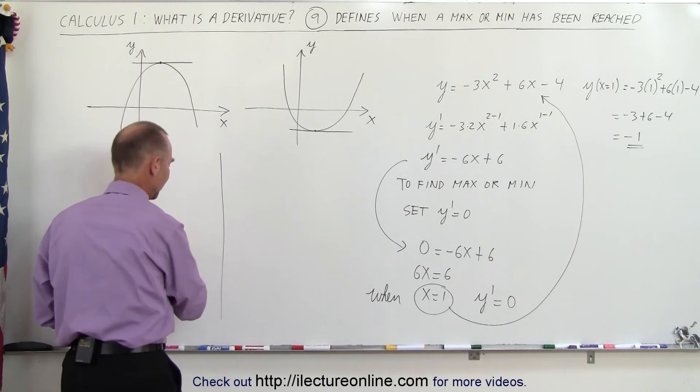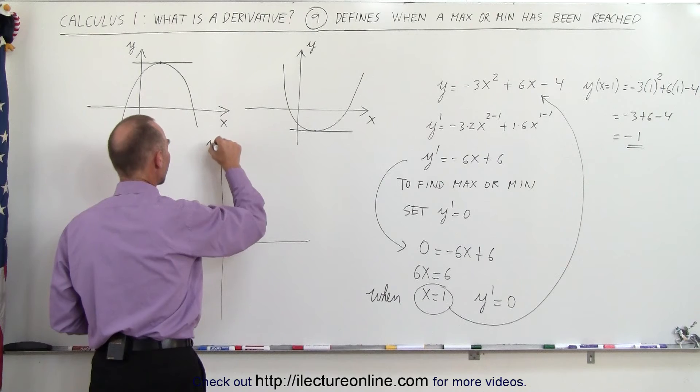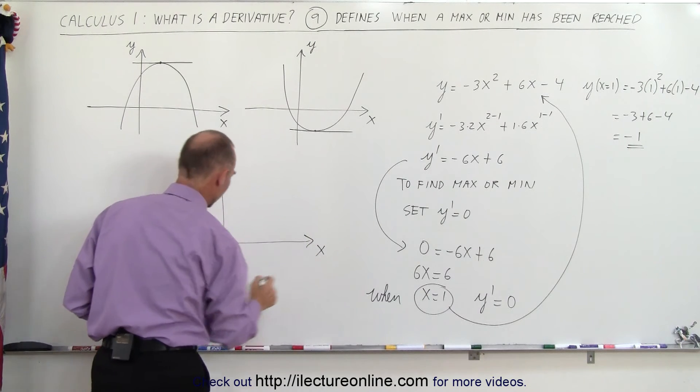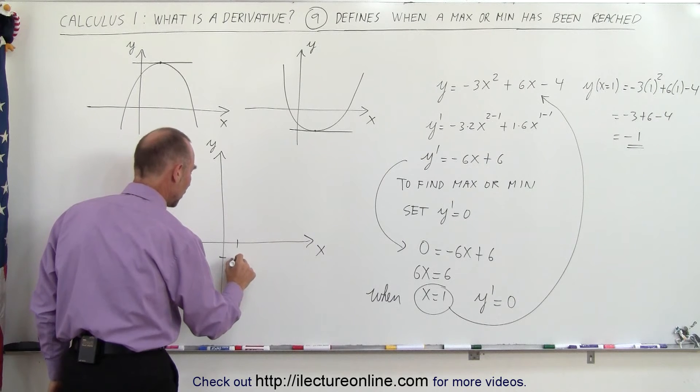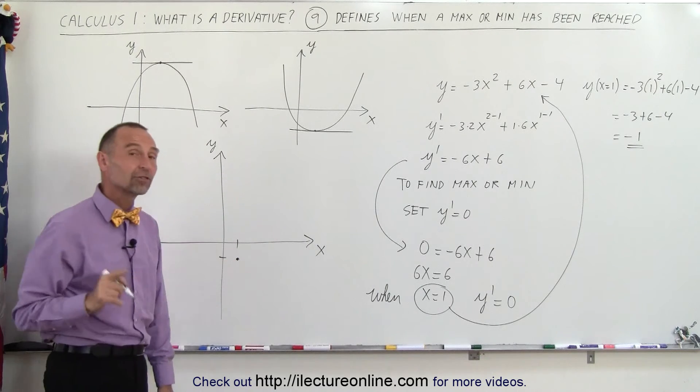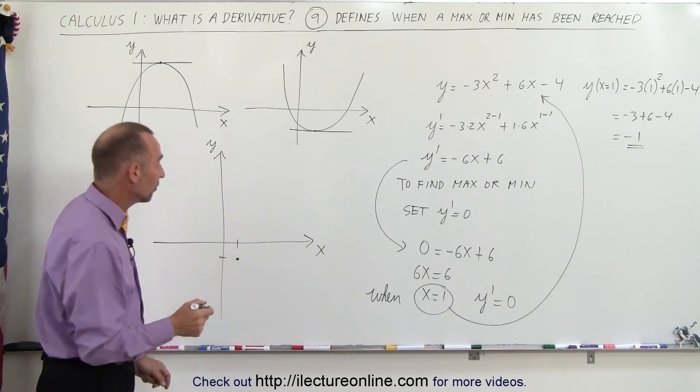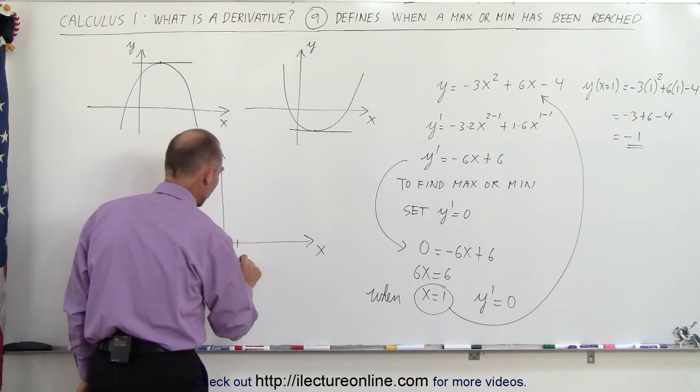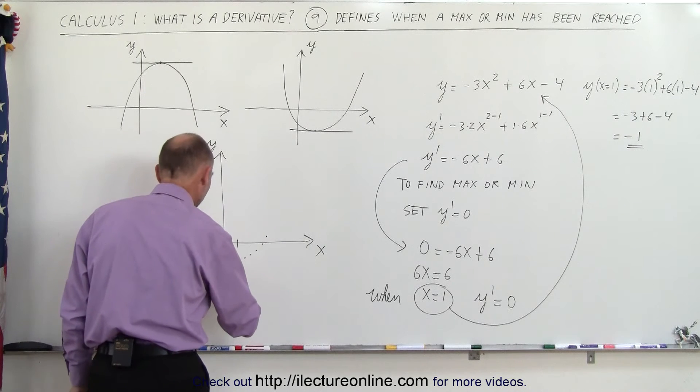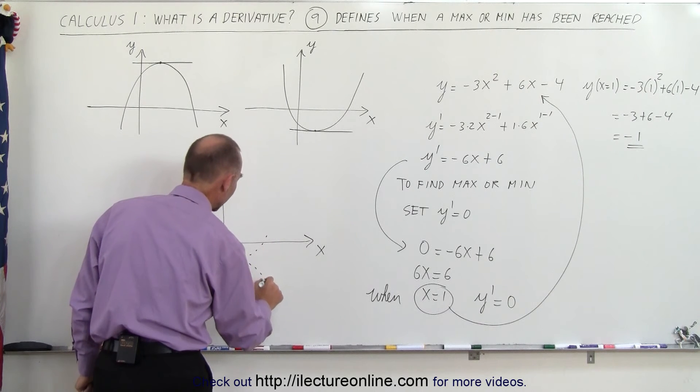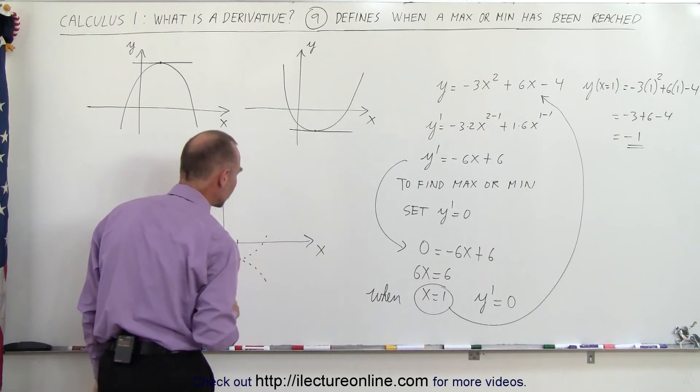So let's find that point on the graph. There's our y axis, there's our x axis, so when x equals 1, y is negative 1, so there's the point. That's where the slope of the function is zero. Which means that either the function will look like this—therefore it's a minimum point—or the function will look like this and therefore it's a maximum point.